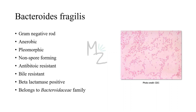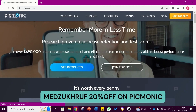Bacteroides Fragilis is bile resistant — I'll talk about bile resistance in lab diagnosis, so stay tuned for that. It is beta-lactamase positive, and that's why it is penicillin resistant. Bacteroides Fragilis belongs to the Bacteroidaceae family. This is how Bacteroides Fragilis looks like under the microscope. I'll show each sphere form later in today's video.